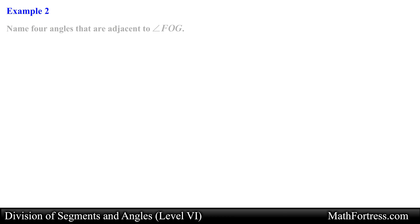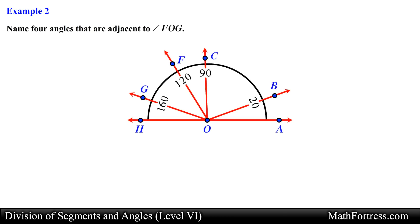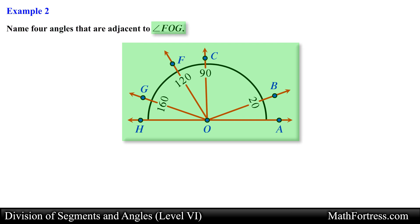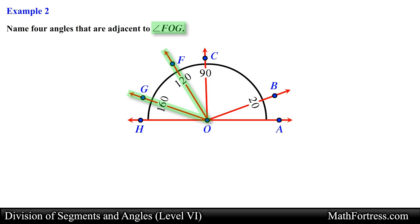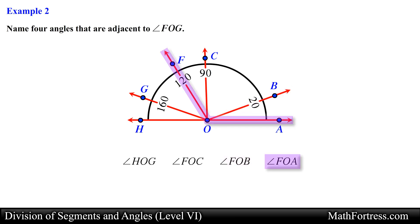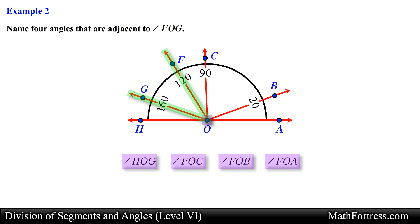Let's take a look at the next example: Name 4 angles that are adjacent to angle FOG. Similar to the previous problem we are provided with a diagram with various angles and are asked to name 4 angles that are adjacent to a particular angle. Let's first identify angle FOG in the diagram. Notice that angle FOG has point O as its vertex, meaning any adjacent angles will also have this point as its vertex. One such angle would be angle HOG, another would be angle FOC, a third would be angle FOB, and a fourth would be angle FOA. All of these angles have point O as a vertex and share a side with angle FOG. So this is our final answer.